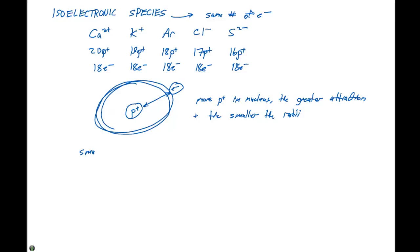So the smallest in this series is going to have the one with the most protons. We would see calcium two plus has 20 protons. The largest is going to be the species with the least number of protons, which is the sulfide. And the order in which these are arranged is increasing. The increasing radius is in order of decreasing number of protons.